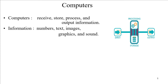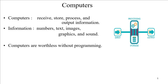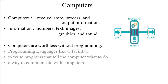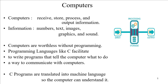Information is in the form of numbers, text, images, graphics, and sound. Computers are worthless without programming — the hardware is of no use until it is complemented with software. Programming languages like C facilitate writing programs that tell the computer what to do. These programming languages are used to communicate with the computer. As a programmer or developer, if I want to communicate my intention to the computer, that is done through computer languages like C.